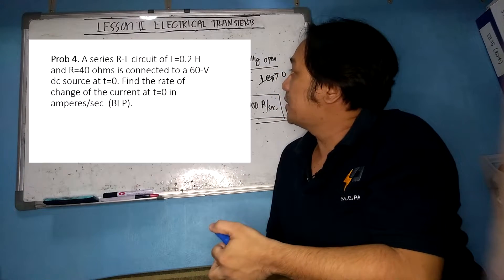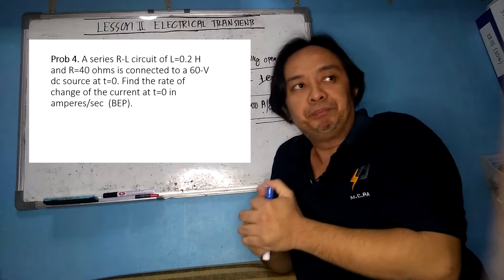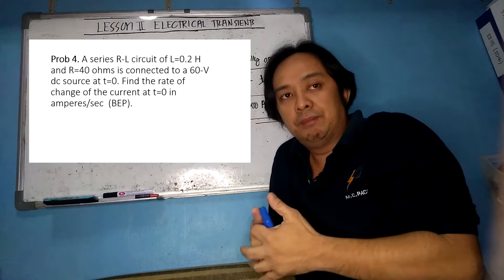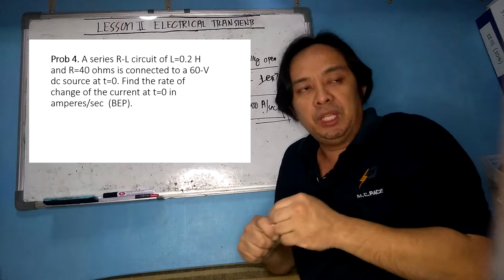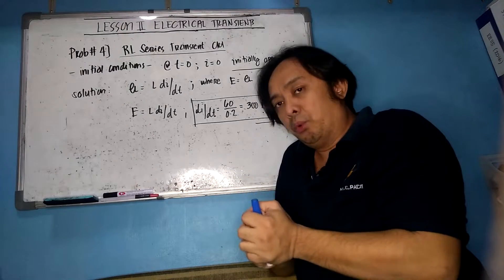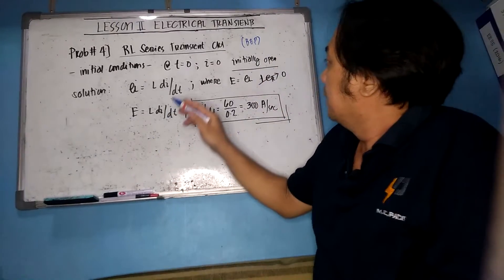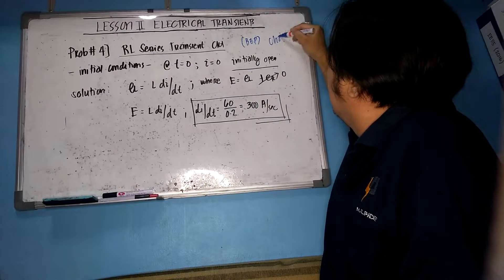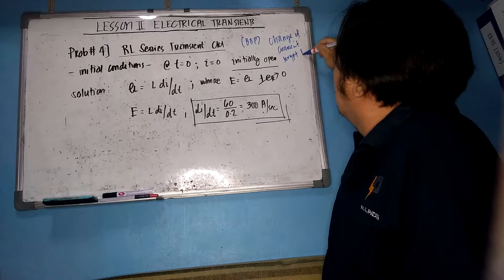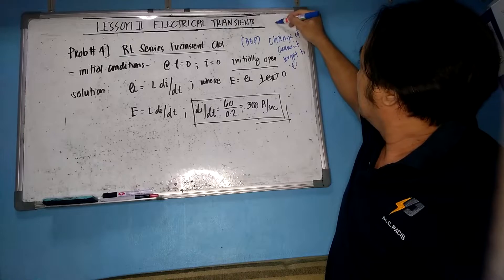Problem number four is another simple problem on electrical transients. An RL series transient circuit has L = 0.2 henry and R = 40 ohms, connected to a 60 volt DC source at t = 0. We need to find the rate of change of current at time equal to zero in amperes per second. This is actually a board exam problem. Our main goal is to get di/dt with respect to time.